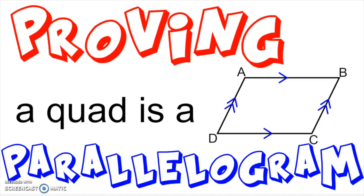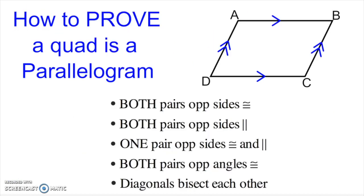Hey everyone, I'm Mr. Ray and today I want to talk to you about proving that a quadrilateral is a parallelogram. There's a difference between property and proof. If you want to prove that something is a parallelogram, there are actually five ways for us to do this. Here are the five ways to prove a quad is in fact a parallelogram.